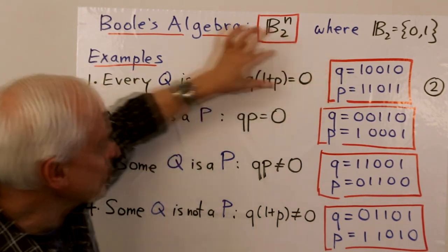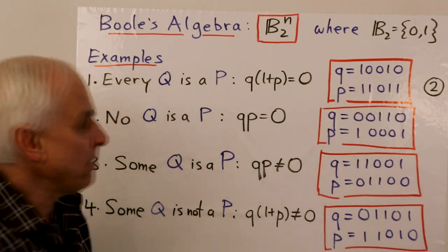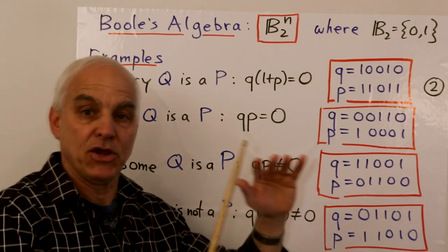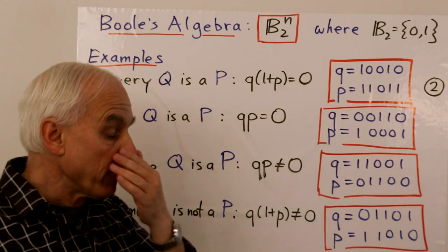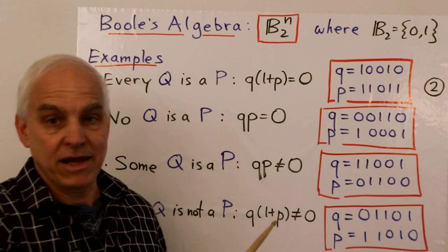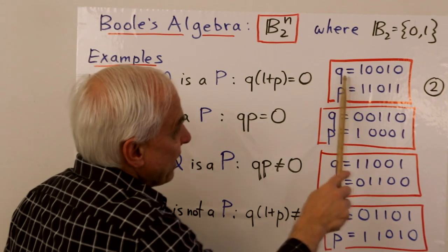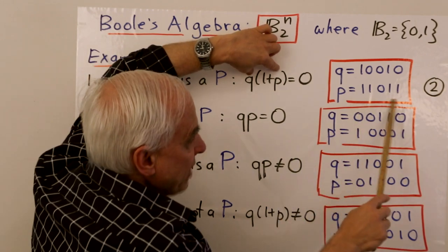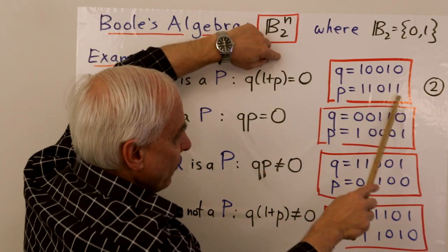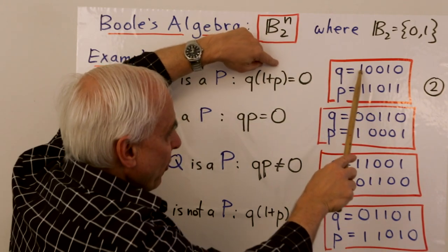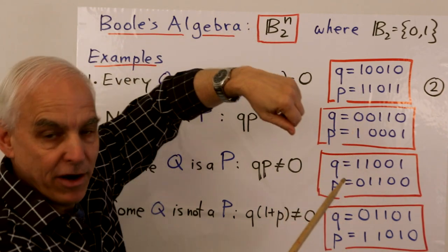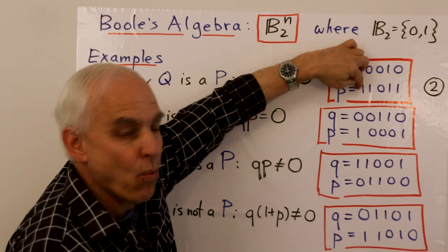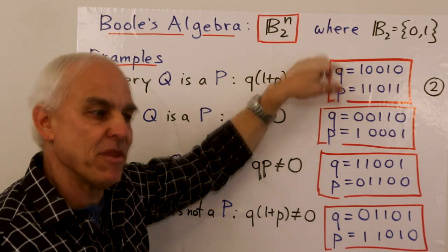This example illustrates the situation, because in this case every Q is a P means that every time Q is on, P is also on — every object that has property Q also has property P. This is then represented by the equation Q·(1 + P) = 0. If we multiply Q by (1 + P), which interchanges all the zeros and ones in P giving (0, 0, 1, 0, 0), and then multiply component-wise, we get zero because the one in (1 + P) is multiplied by a zero in Q. This exactly ensures that whenever there's a one in the Q position, there's a one in the P position, so (1 + P) will have a zero there and the product will be zero.